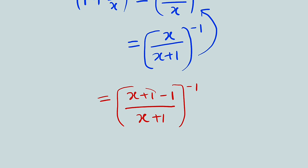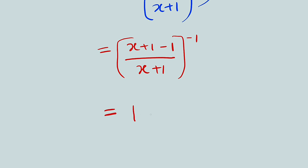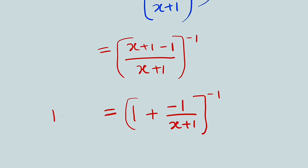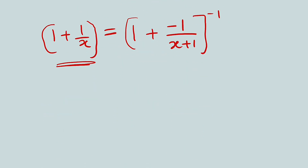Therefore we can separate these fractions. We have (x+1)/(x+1), which is 1, then we take negative 1 and also divide it by (x+1). So this gives us 1 plus (−1)/(x+1), all to the power of negative 1. But remember what we simplified was 1 plus 1 divided by x, and originally this had a power of x plus 1, so let's bring it back. We can write it as (1 + 1/x)^(x+1), and we raise this whole expression to the power of x+1 as well to keep it equivalent.